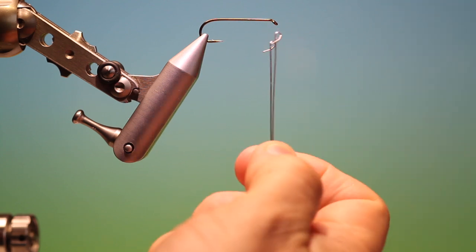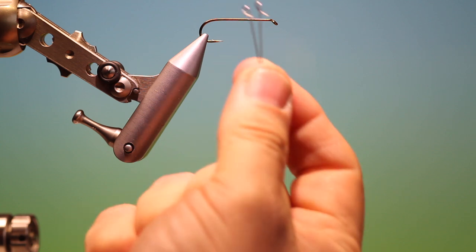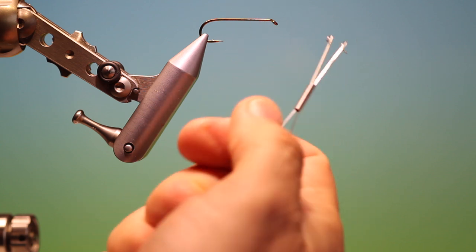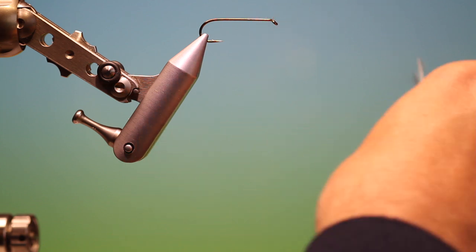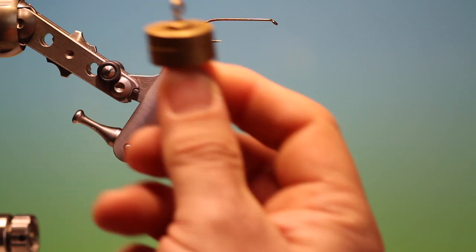This is the open kind, which is very nice for light materials like CDC and synthetic dubbings. And then the traditional kind with a single hook—this is what I prefer.